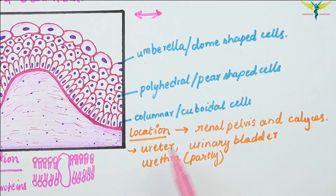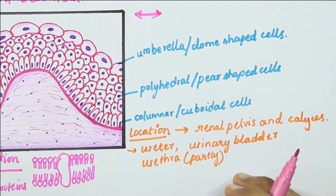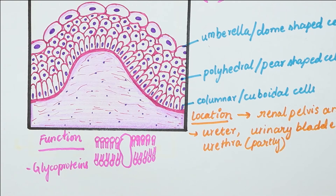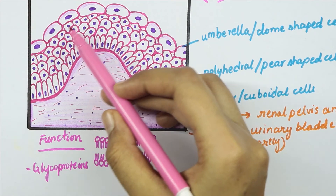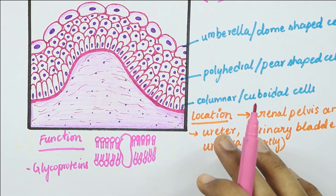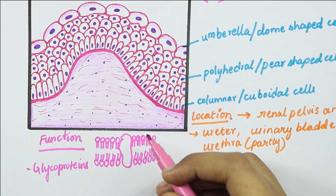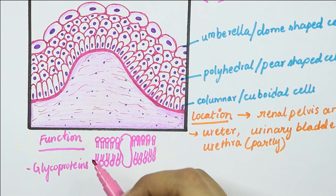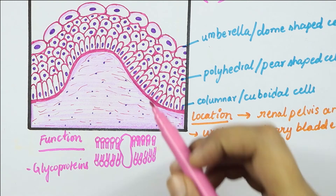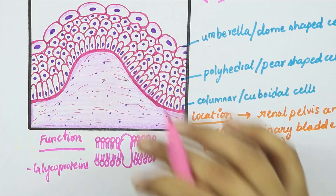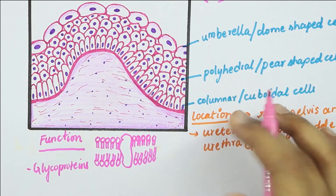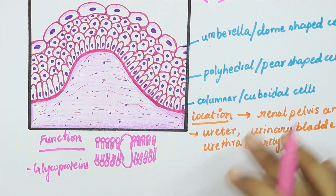The urothelium is present in the renal pelvis and calyces, the ureter, the urinary bladder, and part of the urethra. The glycoproteins embedded in the plasma membrane of the surface epithelium make it impervious and resistant to the toxic effects of urine, providing protection to the adjacent tissues of the urinary bladder.